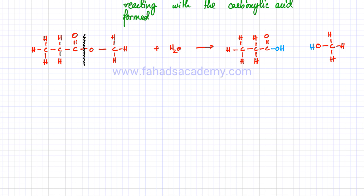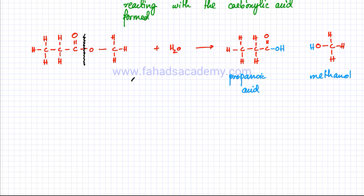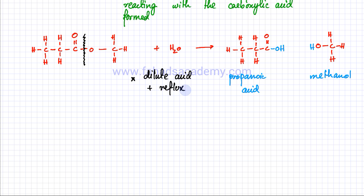So the products are propanoic acid and methanol. These are the products when methylpropanoate is hydrolyzed using dilute acid plus reflux.